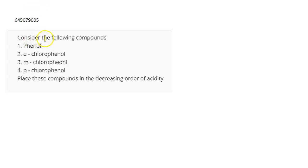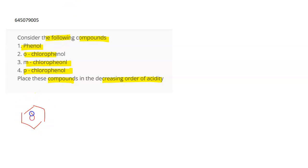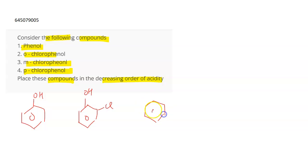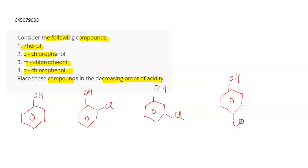So the question is: consider the following compounds — phenol, orthochlorophenol, metachlorophenol, and parachlorophenol. You have to place these compounds in decreasing order of acidity. We have phenol, then orthochlorophenol, then metachlorophenol where chloro is at the meta position, and then parachlorophenol where chloro is at the para position.